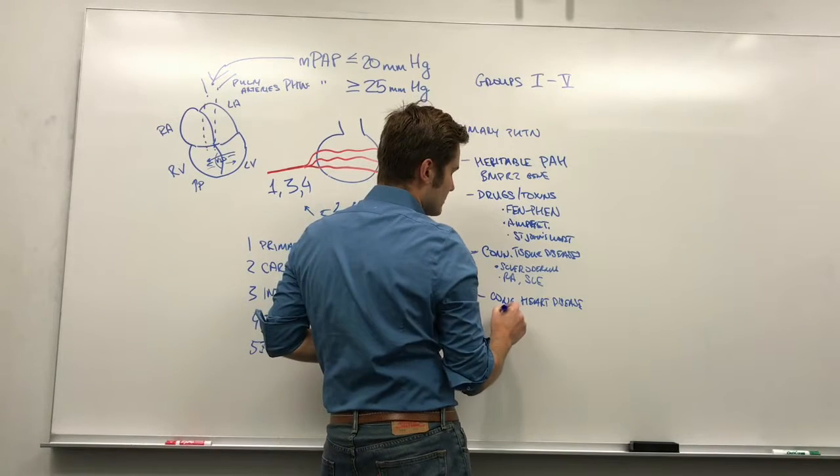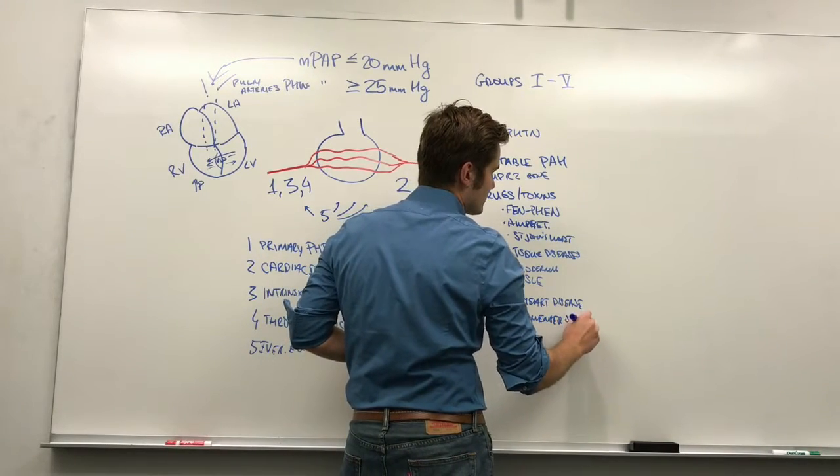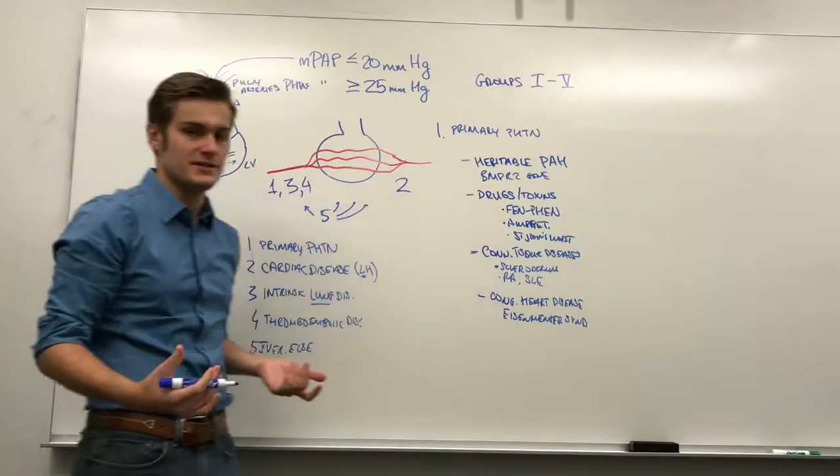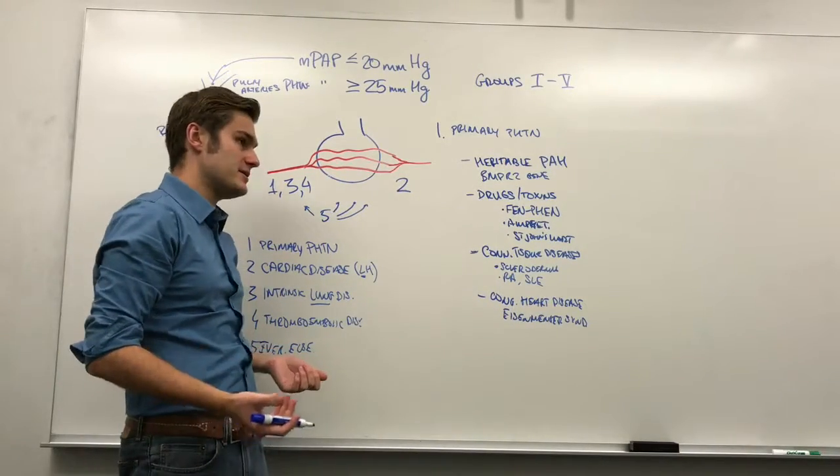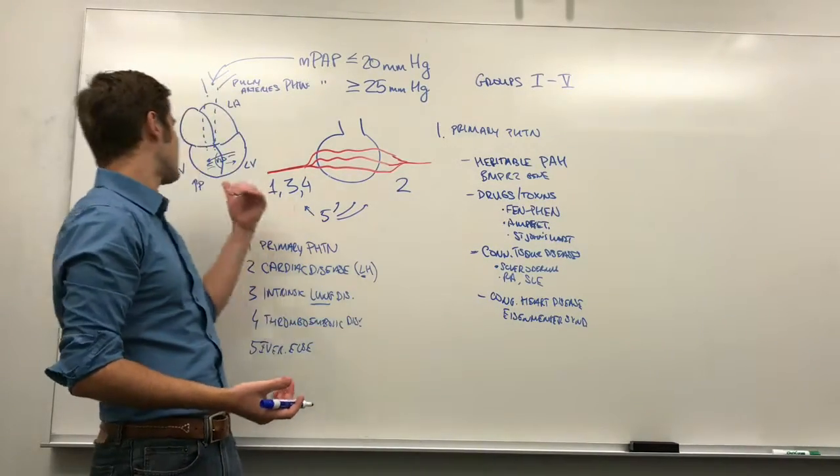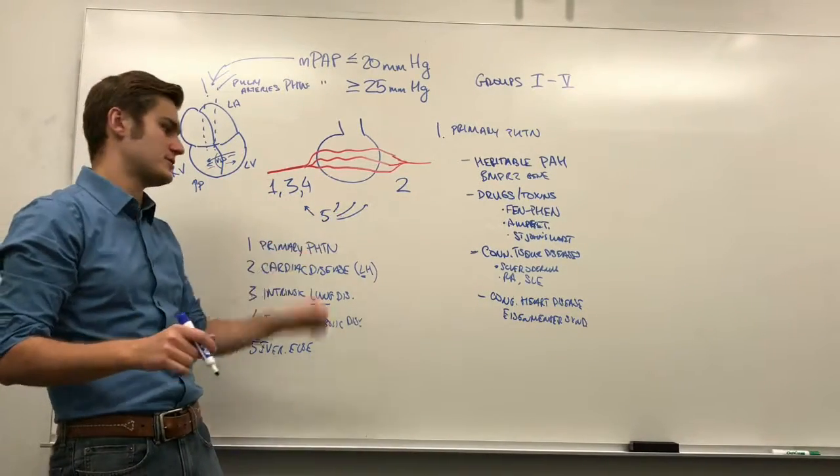So, anything that can cause Eisenmenger syndrome essentially, which is what I just described. Very large VSDs, large ASDs, anything that causes shunting of blood from left to right because eventually it'll be shunting from right to left.